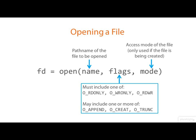The mode argument is only relevant if the file is being created. It is typically specified as an octal constant and it specifies the read, write, and execute permissions that will be given to the file. As you may know, the actual permissions the file will get will be limited by the umask of the process.